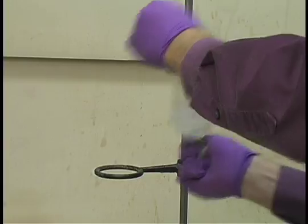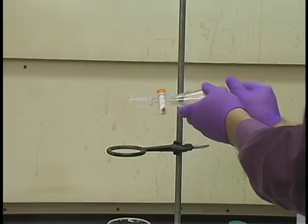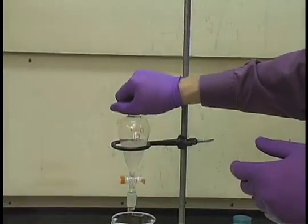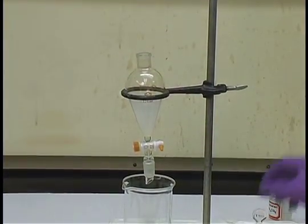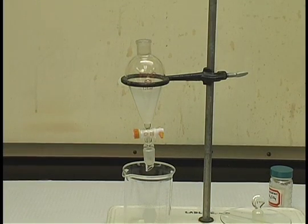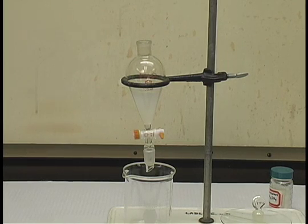After one minute and venting, return the separatory funnel to the ring and remove the stopper. Allow the separatory funnel to stand for about a minute in order to allow the two layers to separate, and you will see a definitive boundary shortly form.